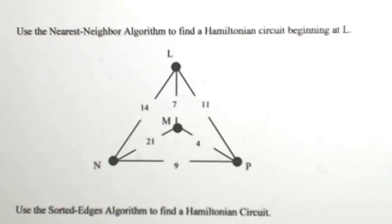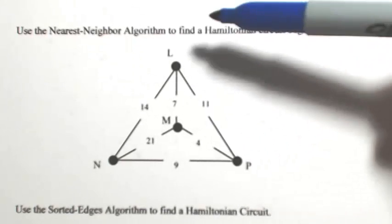Use the nearest neighbor algorithm to find a Hamiltonian circuit beginning at L. So in using the nearest neighbor algorithm, what we're going to do is start at L and then go to the least cost edge.